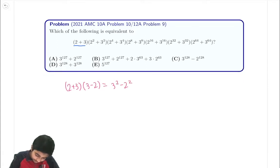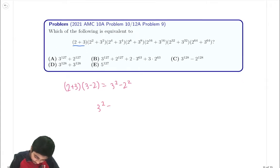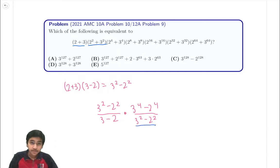So we can actually express this as 3 squared minus 2 squared over 3 minus 2 times 3 to the 4th minus 2 to the 4th over 3 squared minus 2 squared. Because, remember, 2 squared plus 3 squared times 3 squared minus 2 squared is equal to 3 to the 4th minus 2 to the 4th by the difference of squares factorization.